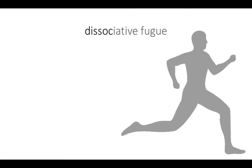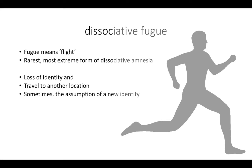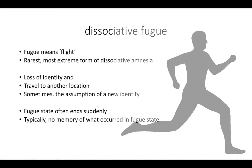Dissociative fugue is actually a form of dissociative amnesia — just a more extreme version. Fugue means flight. Dissociative fugue is the rarest and most extreme form of dissociative amnesia. It involves a loss of identity and travel to some other location — that's the fugue part — and sometimes the assumption of a new identity. The fugue state often ends suddenly, with the person unsure how they ended up in unfamiliar surroundings, and typically no recall of what happened during the fugue state.